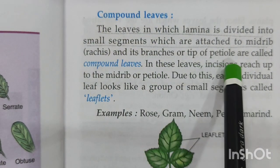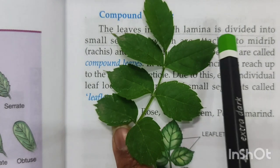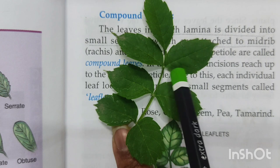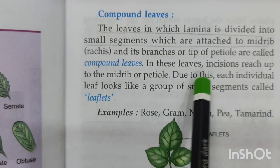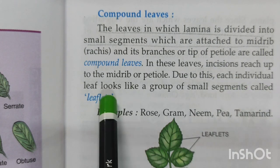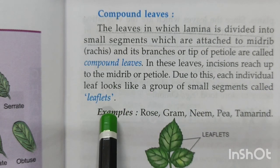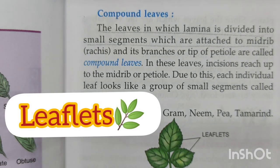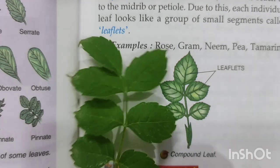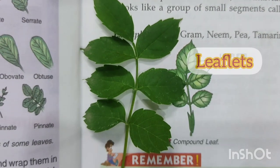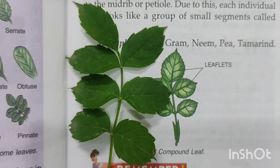In compound leaves, the incisions reach all the way up to the midrib — you can see the complete incisions touching the midrib. Due to this, each individual leaf looks like a small group of segments called leaflets. These small leaf-like structures that can be seen are known as leaflets, as you can see clearly in the picture.